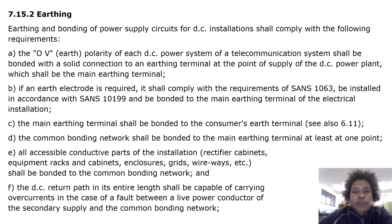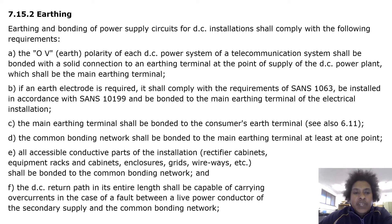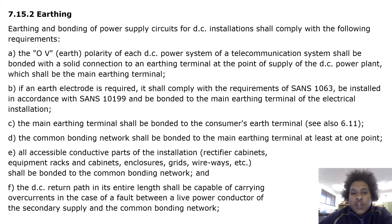If an earth electrode is required, it shall comply with the core requirements of SANS 1063, be installed in accordance with SANS 10199, and be bonded to the main earthing terminal of the electrical installation. The main earthing terminal shall be bonded to the consumer's earth terminal. The common bonding network shall be bonded to the main earthing terminal at least at one point.